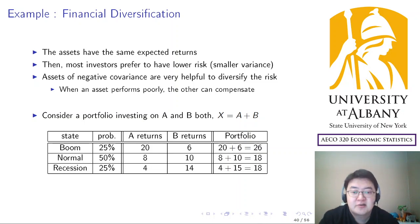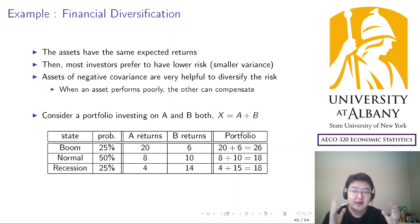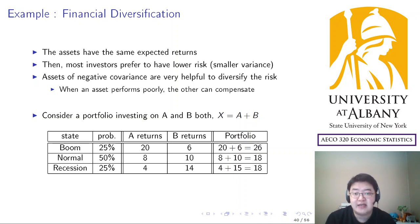Let's start the second video. In this video I'm going to consider an actual portfolio allocation — we are going to mix two financial assets A and B and study how their covariance affects the risk of the portfolio.